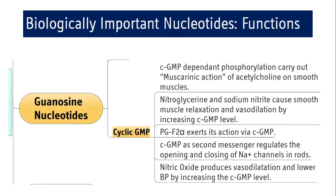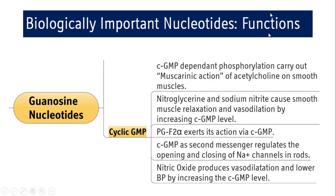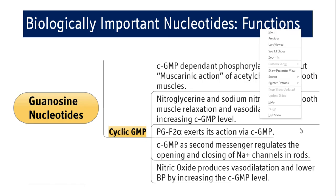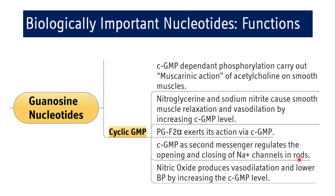Cyclic GMP-dependent phosphorylation carries out the muscarinic action of acetylcholine on smooth muscles. Nitroglycerine and sodium nitrate cause smooth muscle relaxation and vasodilatation by increasing cyclic GMP levels. PGF2-alpha, this prostaglandin, exerts its action via cyclic GMP. It is a second messenger that regulates the opening and closing of sodium channels in rods. Nitric oxide produces vasodilatation and lowers blood pressure by increasing cyclic GMP levels.